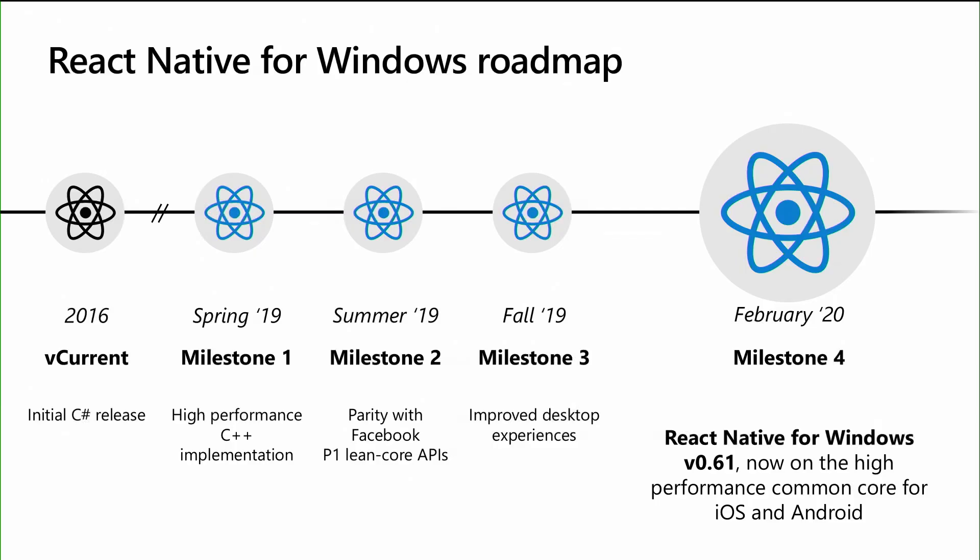Let me tell you a little bit about the background of how we got here. The React Native Windows platform has actually been around for a number of years — it originally came out in 2016. Some of the React Native apps running on Windows today were written in this original platform that we internally referred to as vCurrent. To keep up with the rapid changes Facebook is making to the core platform and to ensure the highest performance, we rewrote the React Native Windows platform in C++ at the beginning of 2019. We're actively working on this vNext version and are excited to announce a new release, updated to take advantage of the high-performance, modern C++ core — the same core that iOS and Android use.